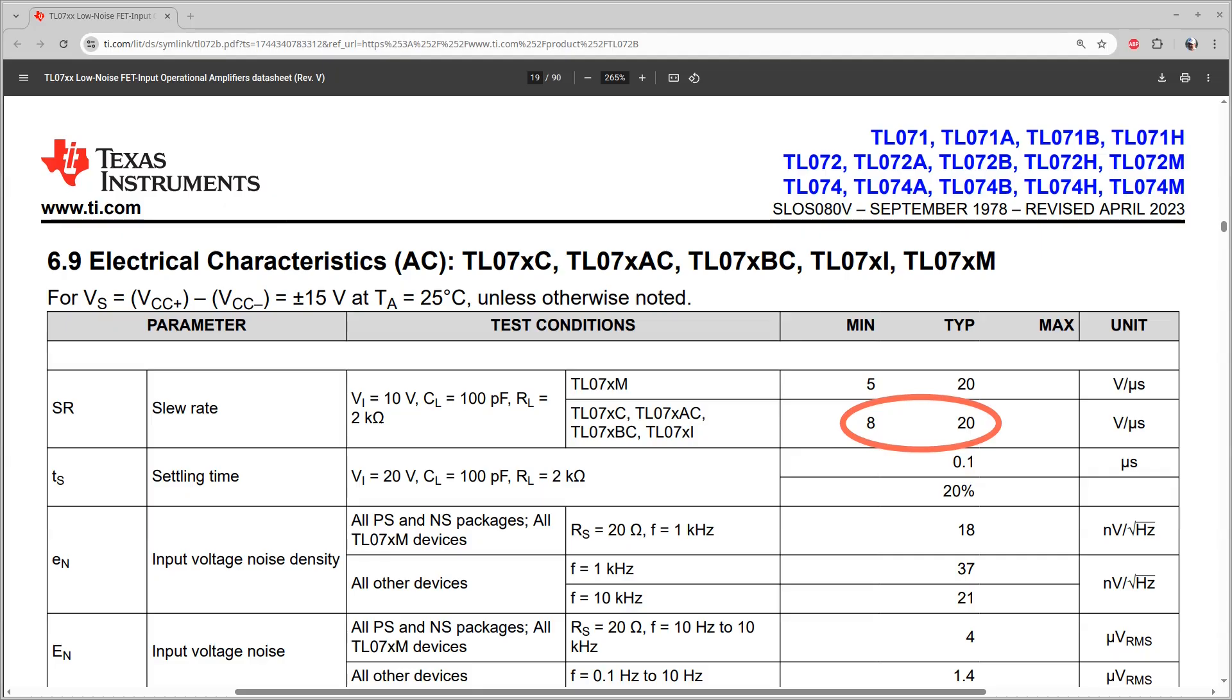For the TL072B op-amp that I used, the minimum slew rate that the datasheet promises is 8 volts per microsecond. That's pretty close to what I saw, about a microsecond and a half to make a sudden 13-volt jump. And the TL072B is one of the faster ones among the cheap op-amps.